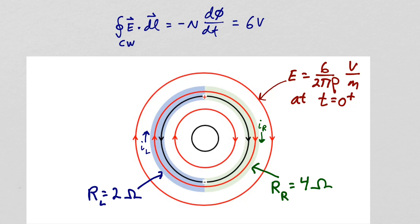As the electric field intensity in the left half ring is reduced, the current will reduce in the left half ring, and as the electric field intensity increases in the right half ring, the current flowing there will increase. The current in the left half ring will reduce and the current in the right half ring will increase until the two currents are equal. When the two currents are equal, there is no longer any change in the charges at the two boundaries and steady state is reached.